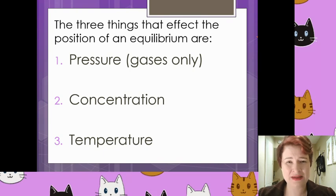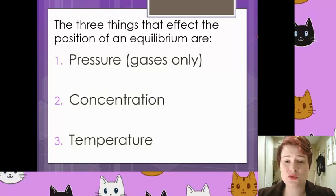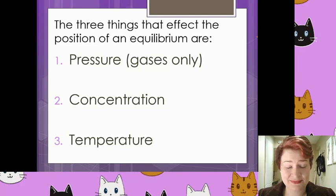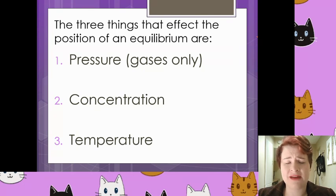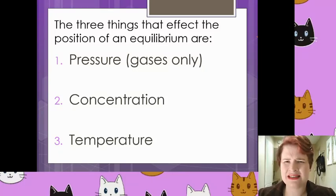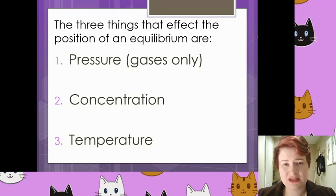There are three main things that affect the position of equilibrium. First, pressure — which only affects gases, so if you've got gaseous reactants and products, pressure will be a factor. Second, the concentration of reactants and products will definitely affect the position of equilibrium. Third, temperature — which is a little trickier because we have to bear in mind exothermic and endothermic processes.